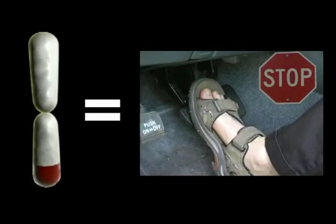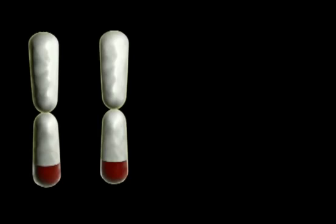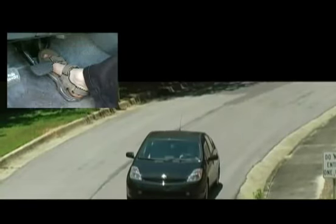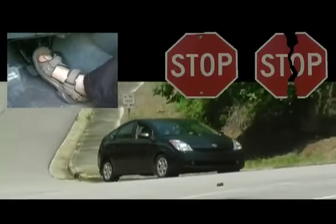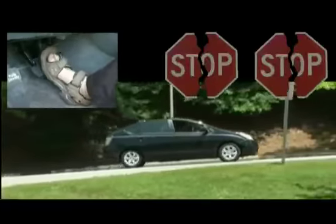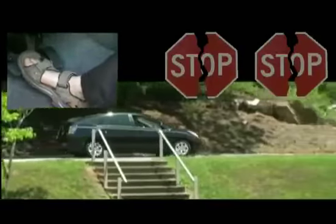Genes whose products function as the equivalent of cellular brakes also exist. As a group, these genes are known as tumor suppressors. Humans have two copies of each gene, one inherited from each parent. If a single copy of a tumor suppressor is damaged, the other copy is usually able to stop the cell from behaving abnormally. This would be like losing either the front or rear brakes of a car — the car may be damaged, but would still be able to stop. But if the second set of brakes is damaged as well, the car would not be able to stop, just as the cell would not be able to stop dividing if both copies of the tumor suppressor genes are damaged.